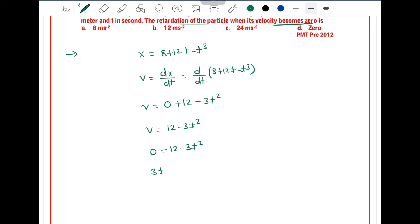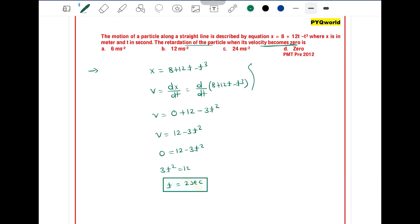So t² = 12/3 = 4, therefore t = √4 = 2 seconds. At t = 2 seconds, we have velocity as zero. So what is the acceleration at 2 seconds?